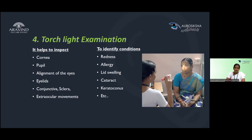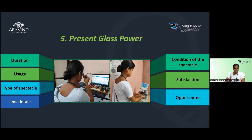Step 4 is torchlight examination, a very important step in refraction. It helps inspect the anterior segment, especially the cornea — whether it is clear or hazy. For the pupil, check action, shape, and size. Check alignment to see if there is any phoria or tropia. Also examine the eyelids, conjunctiva, sclera, and ocular movements for any restriction or limitation. This step helps identify conditions like redness, allergy, lid swelling, lens status, and keratoconus.